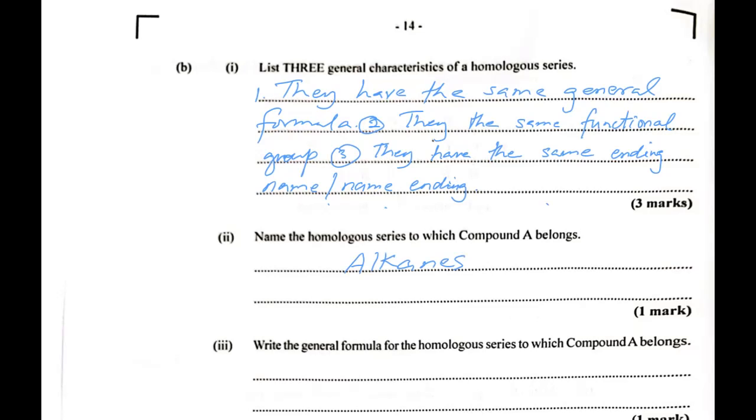And the general formula for the homologous series to which compound A belongs, alkanes, that's CnH2n+2. And we'll just do that again so there are no issues with clarity or resolution. So it's CnH2, and those are subscript, plus 2. That takes us to the next section.